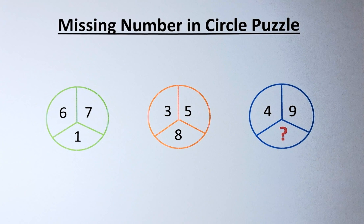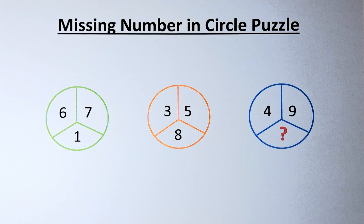Are you able to find the missing number in this circle puzzle? The numbers are as follows. In the green circle, we have 6, 7 and 1.